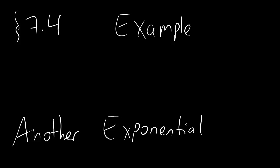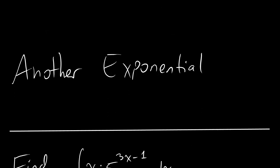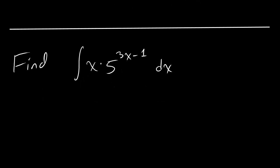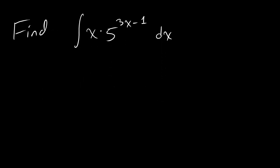Time for another delicious example of integration by parts. And this time, it's an exponential example, which you have seen before, but we're gonna do a slightly harder one just so you can see what the worst is that life might throw at you. So let's say we're supposed to find this integral, x times 5 to the 3x minus 1.